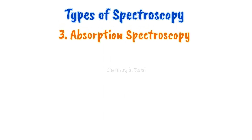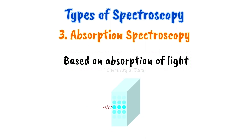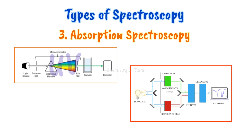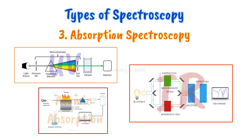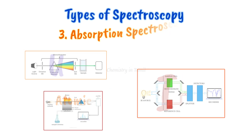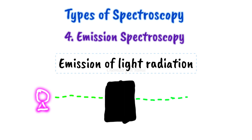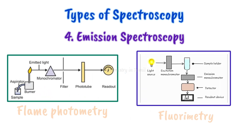Third one: absorption spectroscopy. Then, emission spectroscopy — here, you will observe the light emitted, and study the emitted radiation in detail. For example, emission spectroscopy includes fluorimetry and flame photometry.